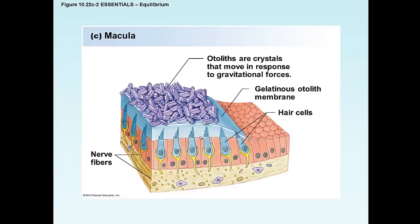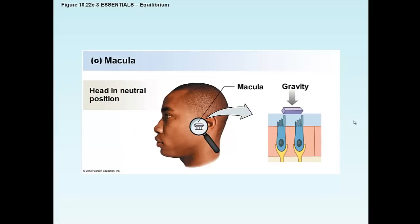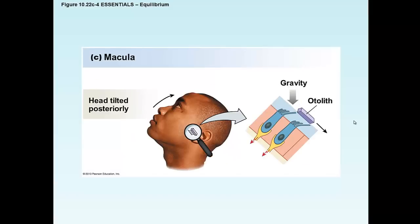The otolith organs contain crystals called otoliths that have mass, so we perceive their force on the gelatinous otolith membrane, beneath which are the hair cells that pick up and perceive that movement. When an otolith is sitting in one place, it pushes down on the gelatinous otolith membrane, letting the hair cells know we are sitting still. If the head moves in a certain direction, the otolith moves down the gelatinous otolith membrane, influences the hair cells, and we know the head is tilting — posteriorly, in one example.